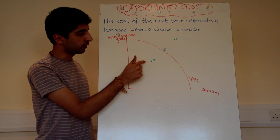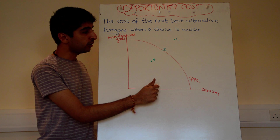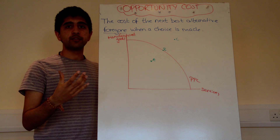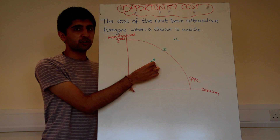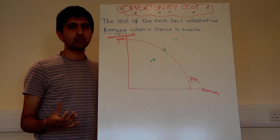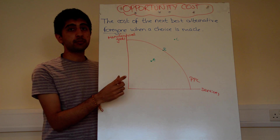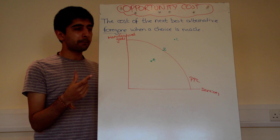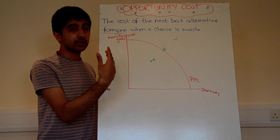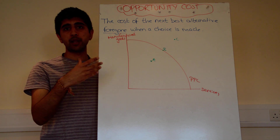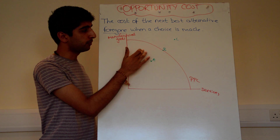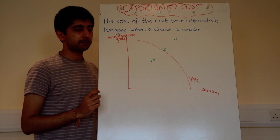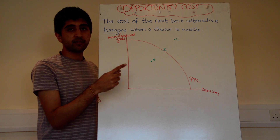Therefore, we're only producing this level of goods and this level of services, when if we were at point B we could be producing a higher level of both. We're not maximising production at point A — we're wasting scarce resources by being inefficient. Point A is productively inefficient. Point B, on the other hand, on the curve, is productively efficient. We're maximising the use of scarce resources and producing more goods and services. Any point on the curve is productively efficient.